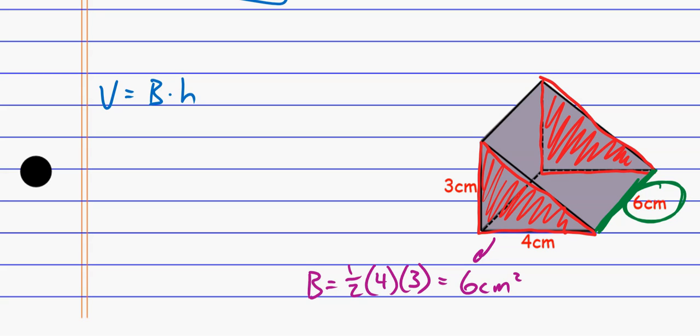So I find the area of the base, the base just happens to be a triangle this time, so I do one-half base times height. And now when I come back over here for volume, I say the volume equals the area of the base, which was six square centimeters, times the height, which is six centimeters. And so when I multiply this out, I get 36, and that's cubic centimeters.